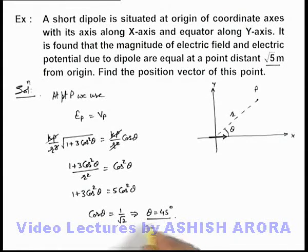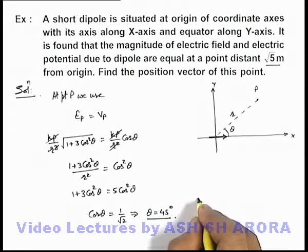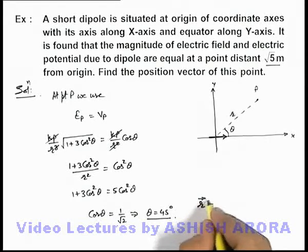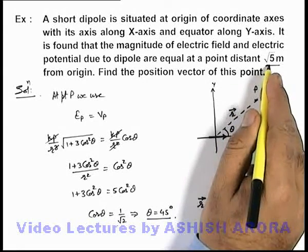And correspondingly, when θ is 45 degrees, the value of position of point P, r, we can calculate as the length is already given as √5.